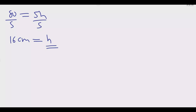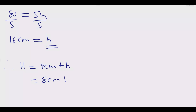Now that h equals 16 cm, the total height of the pyramid is H equals 8 cm plus 16 cm, which equals 24 centimeters. So 24 centimeters is the height of the complete pyramid.